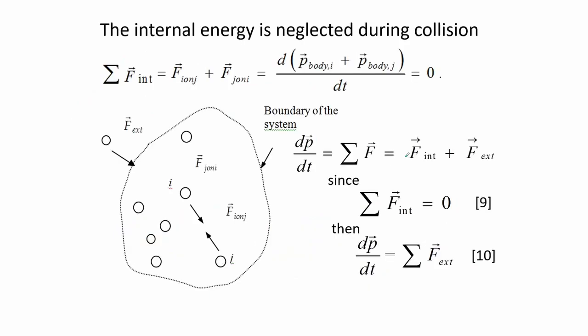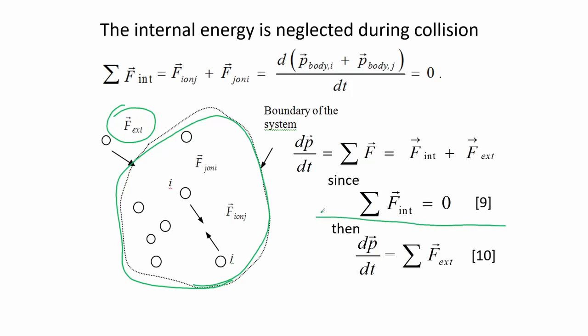Another important point is the nature of forces involved during collision. Consider a system containing masses that move freely but are limited within a boundary — imagine this as a human body where the internal masses are organs. In collisions, we only consider external forces; forces interacting inside the bounded system are not considered. So the momentum is contributed only by the sum of external forces acting on the body.